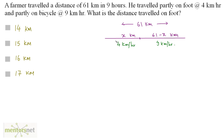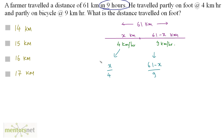Let us calculate how much time it takes to travel by foot and by bicycle. The time taken for travel by foot is distance upon speed, which is x by 4. The time taken for travel by bicycle is 61 minus x by 9. The total time is 9 hours, so adding the respective times gives 9 hours.